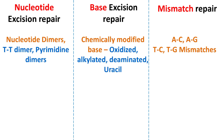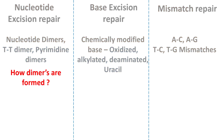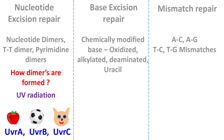Now let's jump back to Nucleotide Excision Repair and ask: how are pyrimidine dimers formed in the DNA? The answer is that they are formed by UV radiation. So the proteins involved in Nucleotide Excision Repair are UvrA, UvrB, and UvrC.